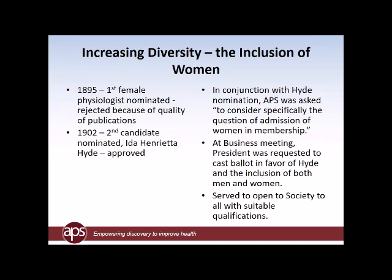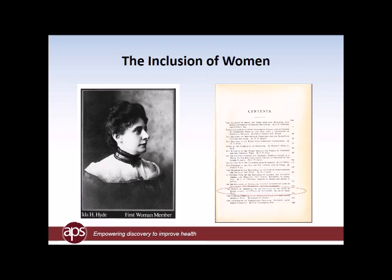In conjunction with the nomination of Henrietta Hyde, APS was asked at the business meeting to consider specifically the question of admission of women in membership. The president was requested to cast the ballot in favor of Hyde and the inclusion of both men and women. At that point in time, the society served as a beacon because all that was required was that you had the appropriate qualifications. And it's important to note that while Henrietta Hyde did not become an APS member until 1902, she actually published a single-author paper in the first issue of the American Journal of Physiology, which was initiated in 1898. So clearly she was a research scientist in her own right.